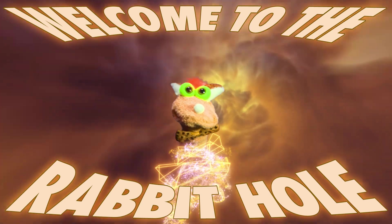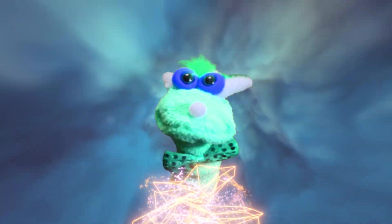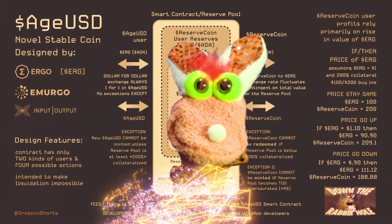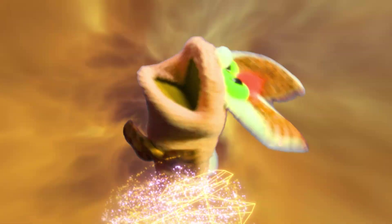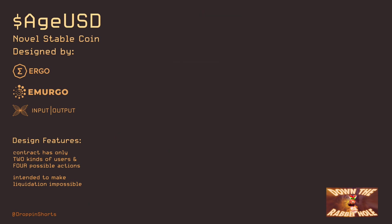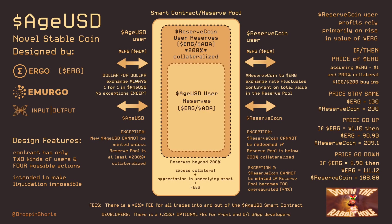Welcome to the rabbit hole. Today we will dig into AgeUSD — it's a brand new kind of stablecoin. I'm not a computer programmer, I'm a rabbit, but I did make this chart with my very own paws. It's my best understanding of how AgeUSD works. AgeUSD is a novel stablecoin — a new kind of setup that has never existed before.